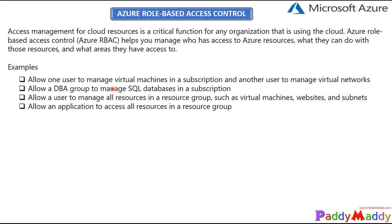Let's take one more example: allow a user to manage all the resources in a resource group — that means he becomes an owner within that resource group, so he can delete, create, do whatever he wants within that resource group, including full control of virtual machines, web applications, subnets, and all that. And one final example: you can allow an application to access all the resources within a group. These are the controls you can use.